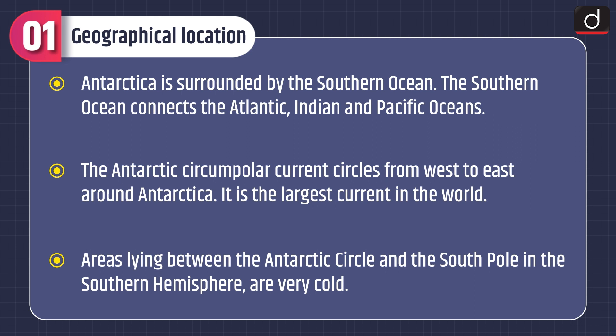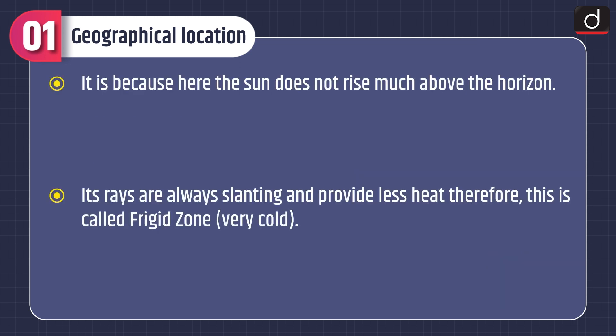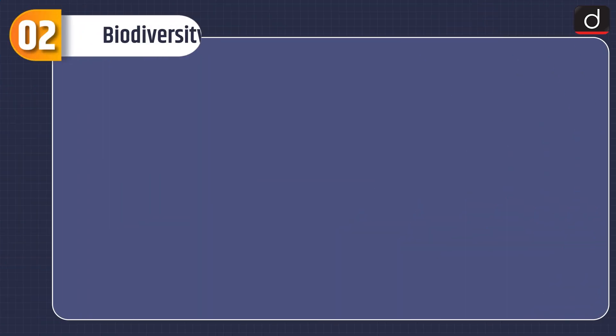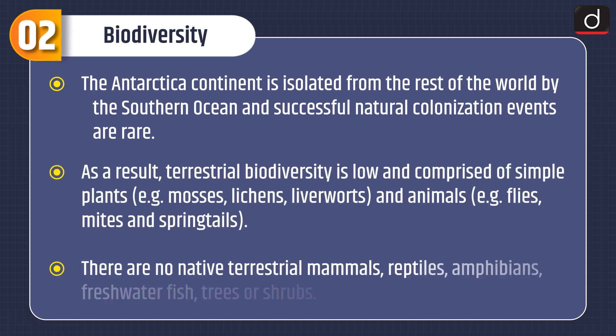The Antarctic Circumpolar Current circles from west to east around Antarctica — it is the largest current in the world. Areas lying between the Antarctic Circle and the South Pole are very cold because the sun does not rise much above the horizon; its rays are always slanting and provide less heat. Therefore, this is called the frigid zone.